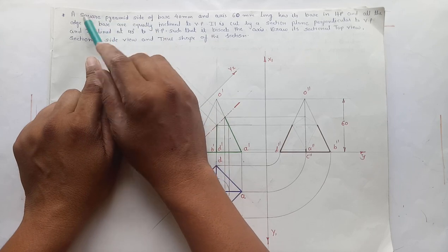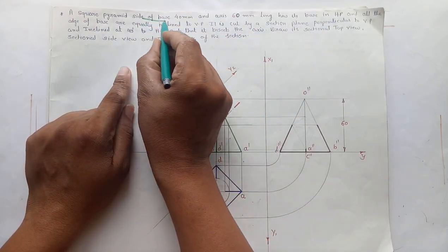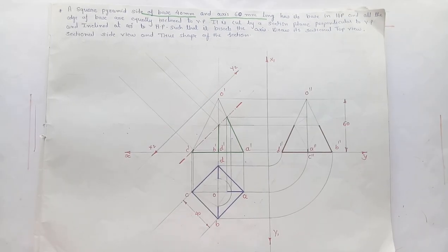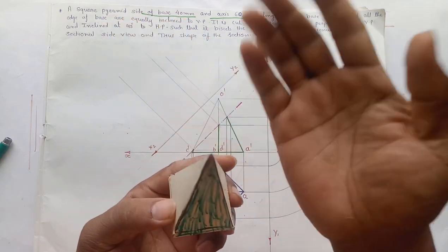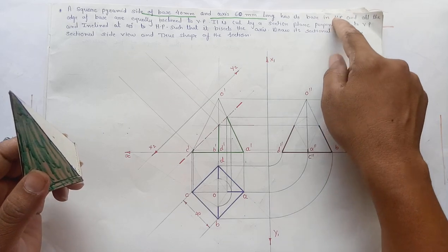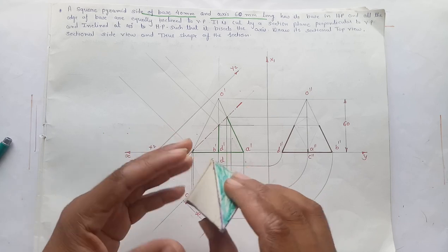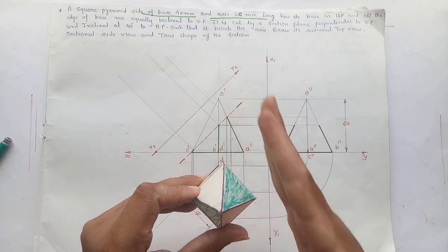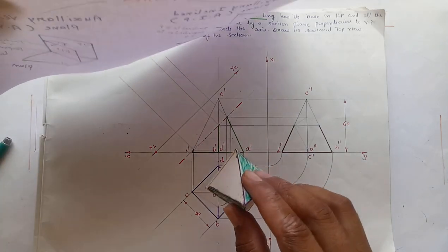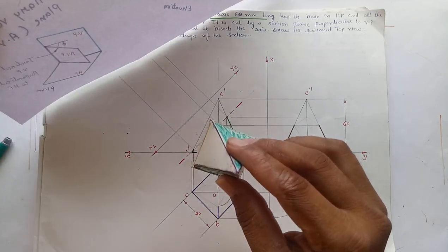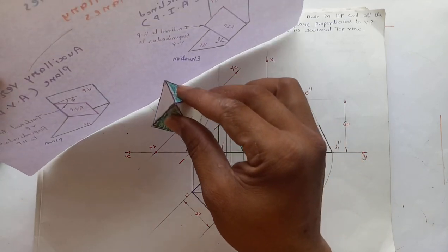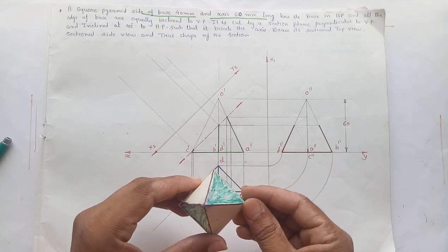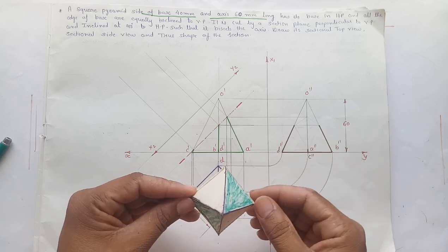Here is one problem: a square pyramid with side of base 40 mm and axis height 60 mm long, has its base in HP, and all edges of the base are equally inclined to VP. We have to draw the plan and elevation of the pyramid first of all.